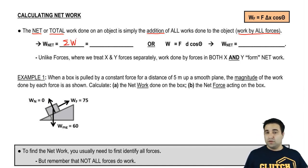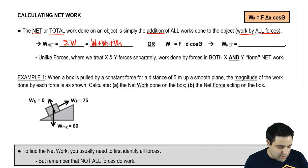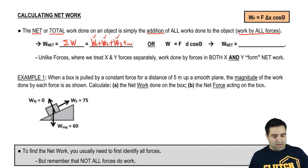So if you have an object and there's three forces acting on it, and they all do work on the object, you'd have something like work one plus work two plus work three. And if you can find all these numbers, you just add them up. And if you had more, obviously you would just keep adding.